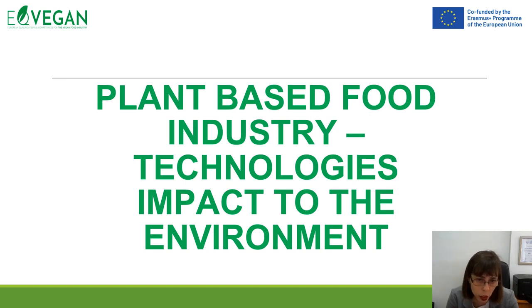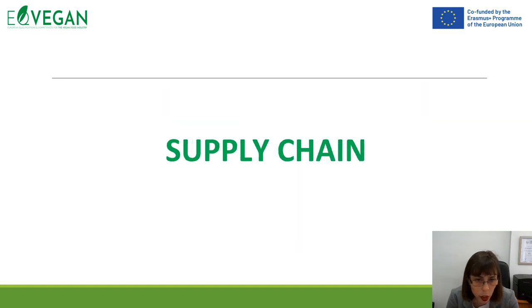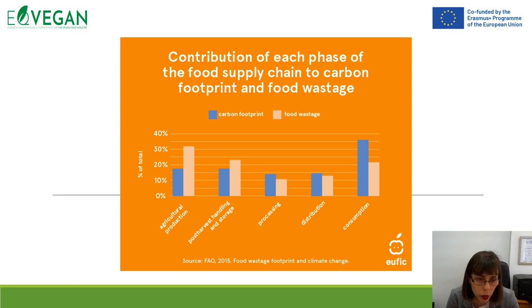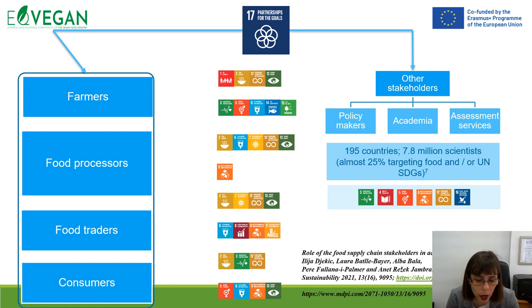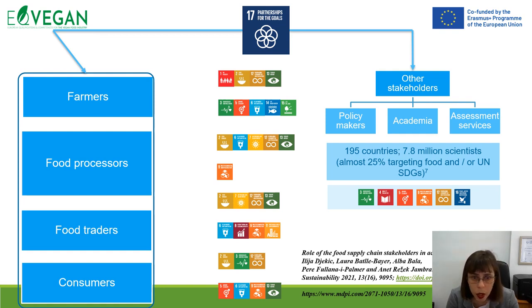In the plant-based food industry, we need to think about different technologies that impact the environment, including carbon footprints and waste in the supply chain. It is really important to think about the partnership for the goal — the 17 sustainable development goals — and join forces with farmers, food processors, food traders, consumers, and other stakeholders like policy makers, academia, and assessment services to go in line with SDGs in the entire food supply chain.